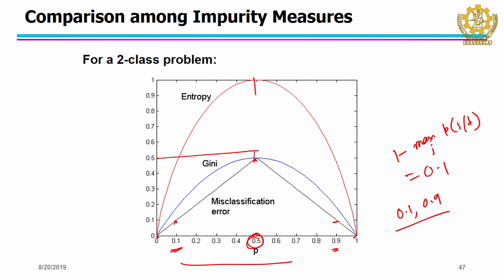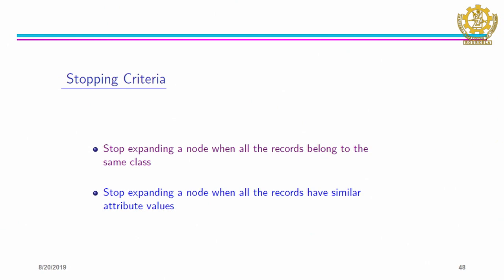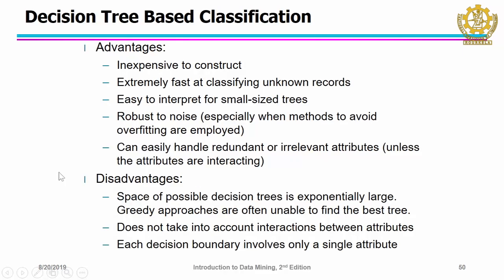You stop expanding a node when all objects belong to the same class, or all records have similar attribute values, or the number of objects in a node is very small. The advantages of decision trees are: they are inexpensive to construct, extremely fast to classify (just trace the tree), easy to interpret, and perform equally well compared to other classification techniques.